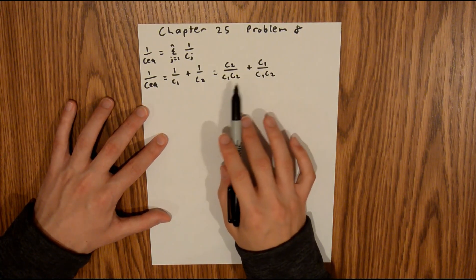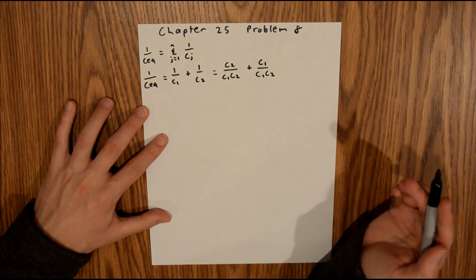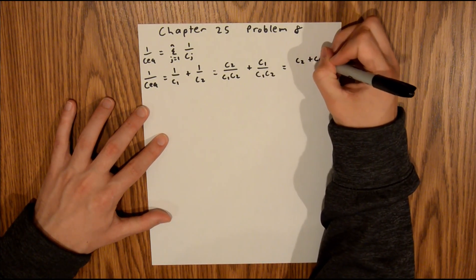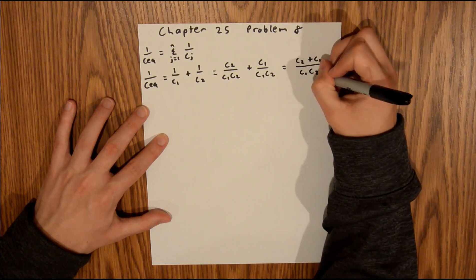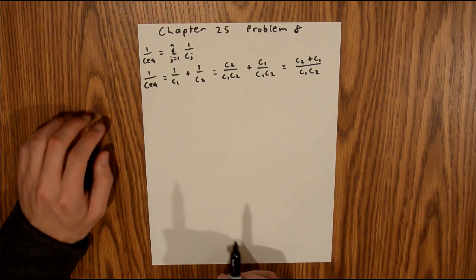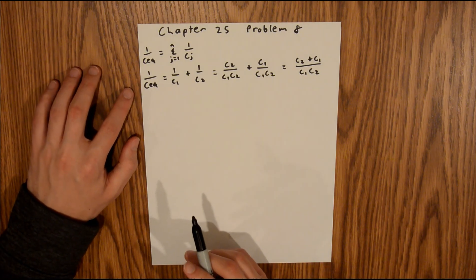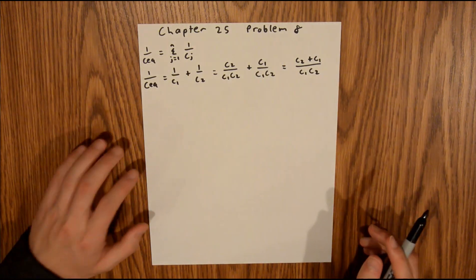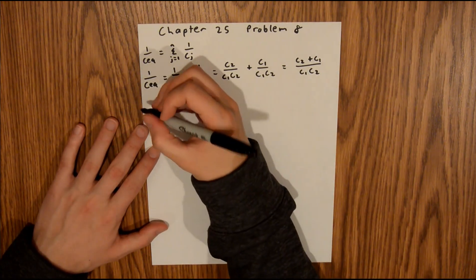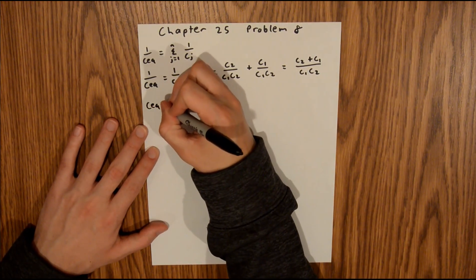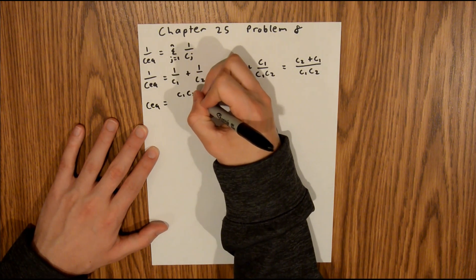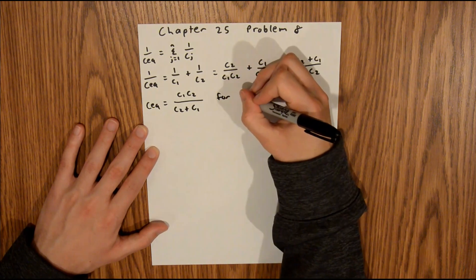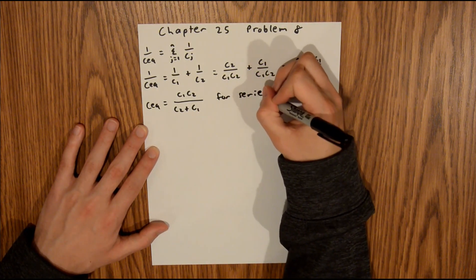Now that we have a common denominator, we can add these two terms to form one term, and that is going to be equal to C2 plus C1 over C1C2. Now we're looking for CEQ, so we can raise both sides to the negative 1 power, or simply just invert the fractions, and that's going to give us CEQ is equal to C1C2 over C2 plus C1 for the series piece.